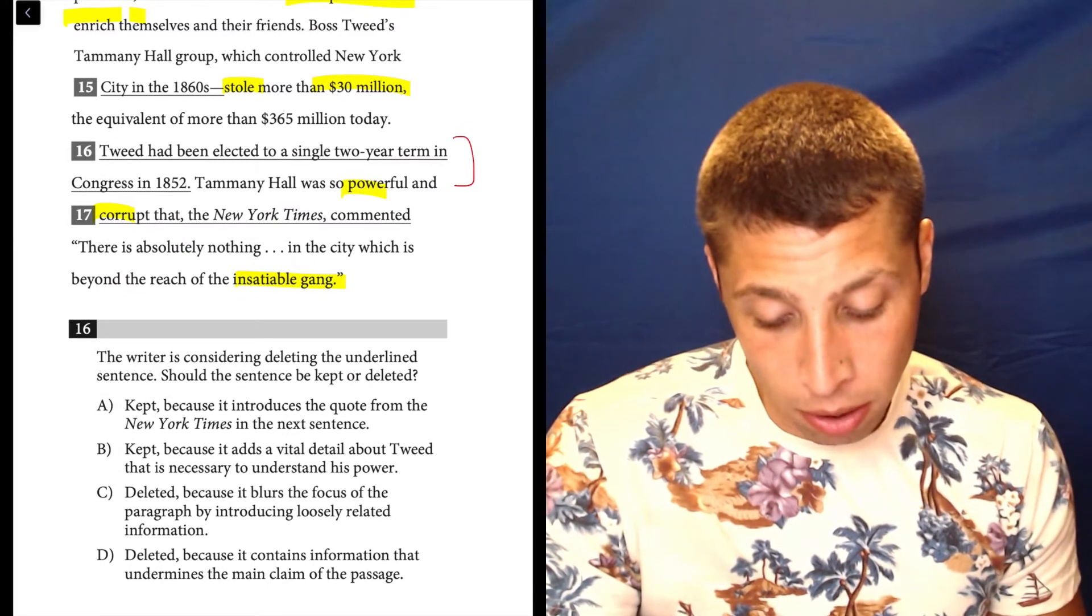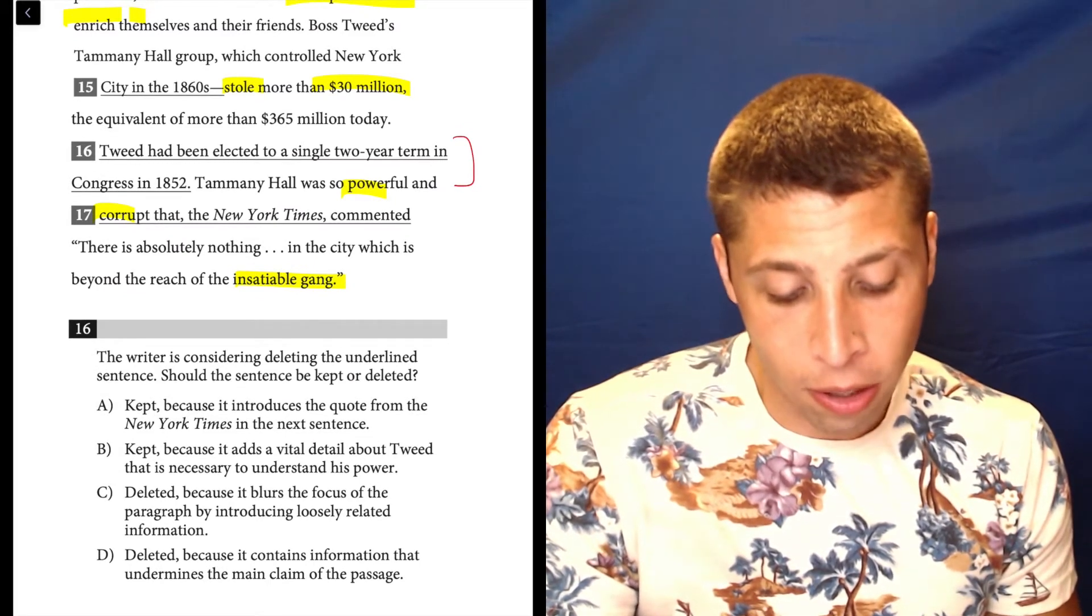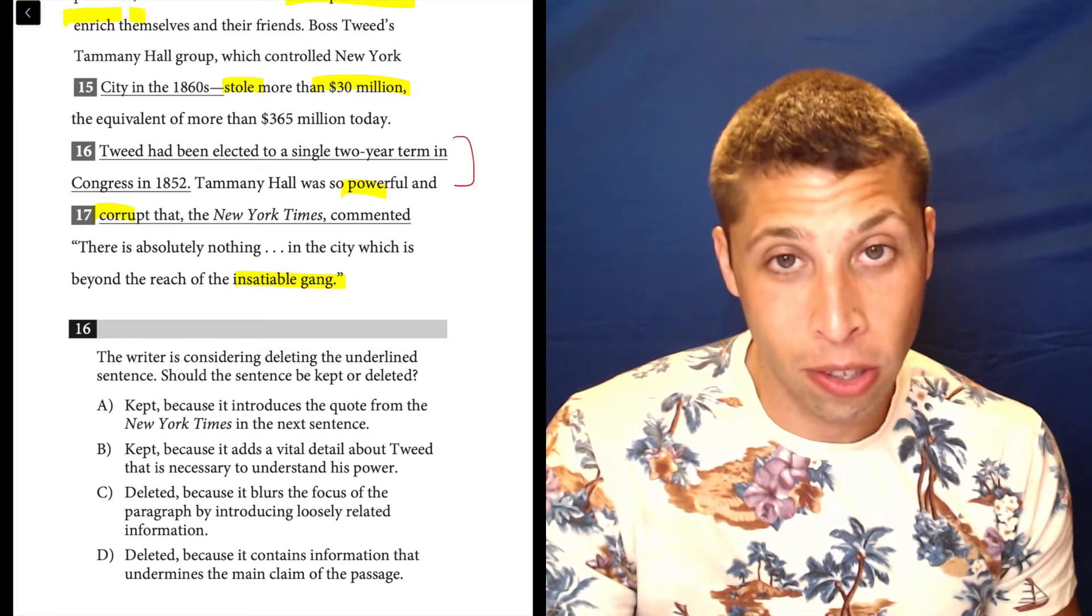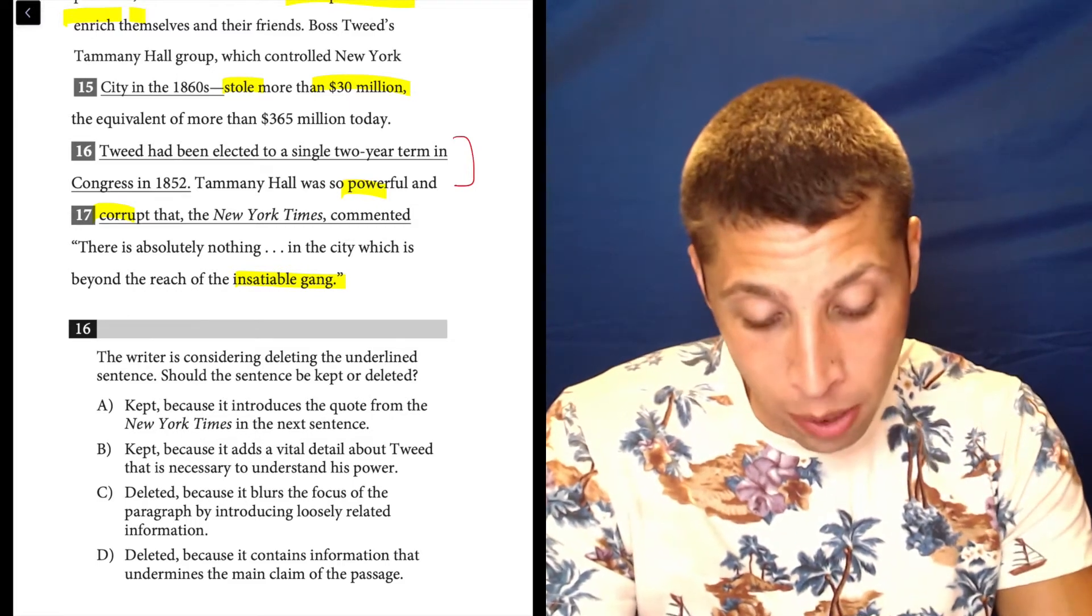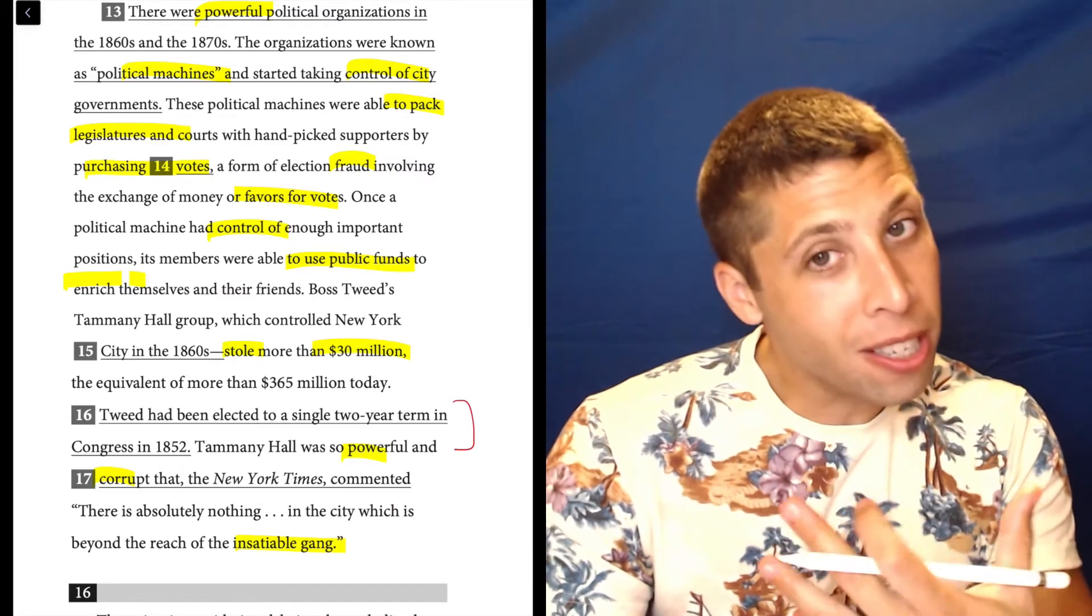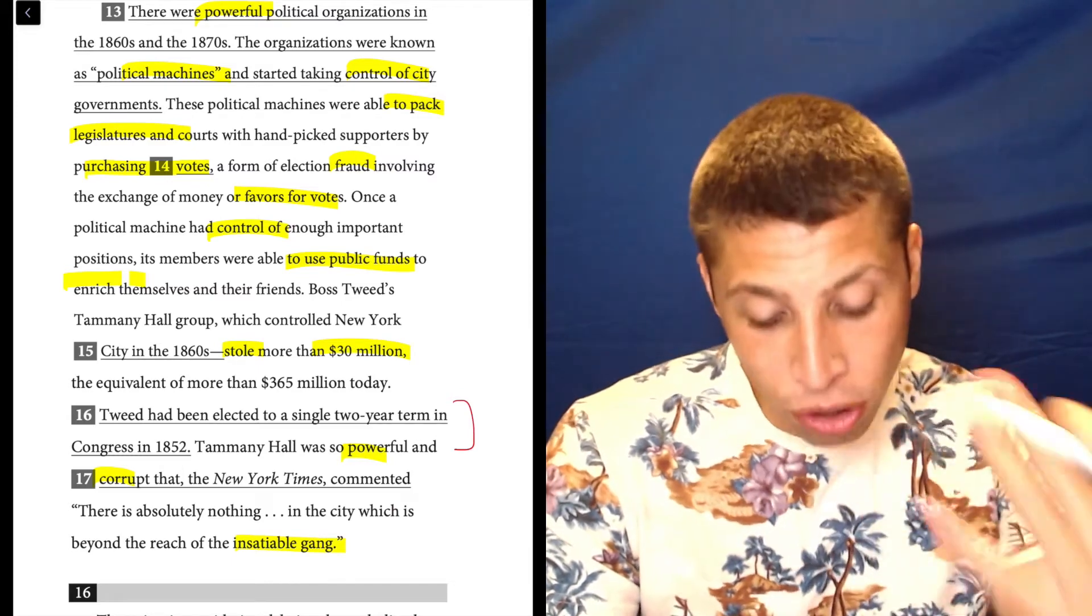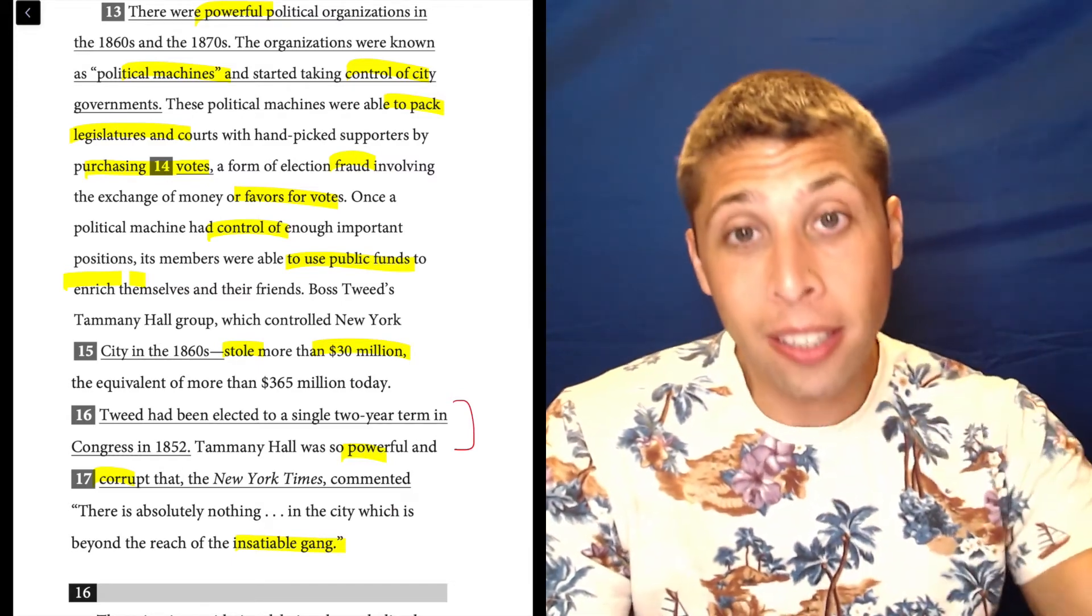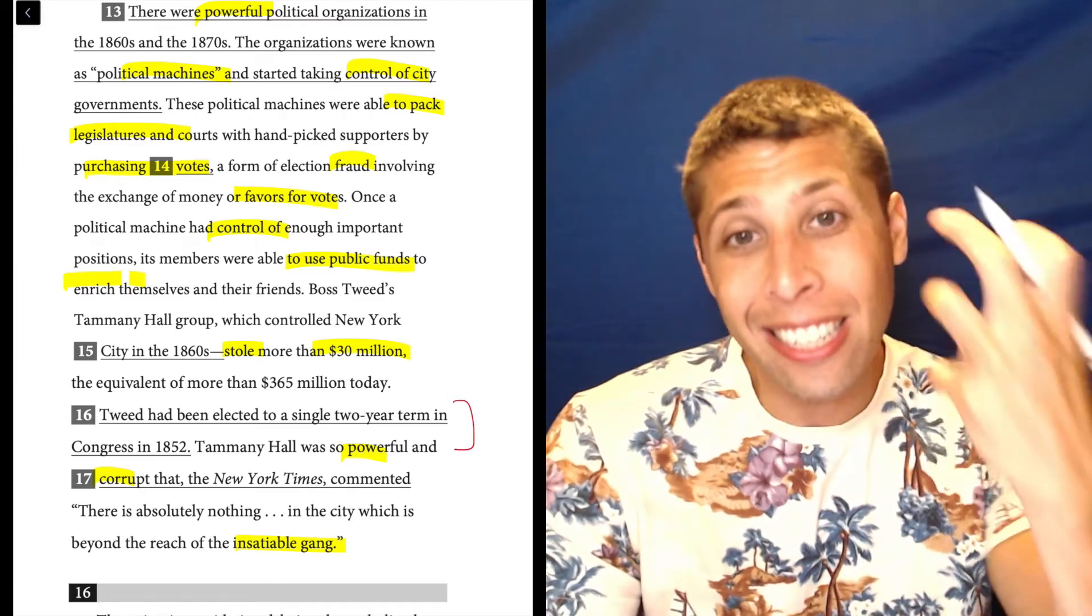So is sentence 16 about corruption? Tweed had been elected to a single two-year term in Congress in 1852. No, it's like a random fact about Tweed. Yes, they talk about Tweed in this paragraph, but you see the repeated ideas. It's not just repeating his name, it's repeating the idea of corruption. Ideas are what we care about.